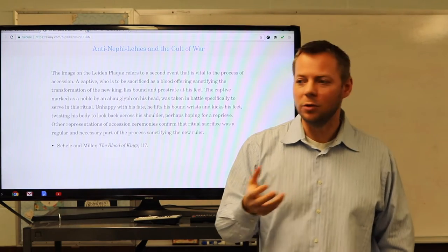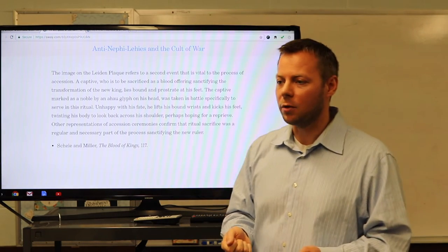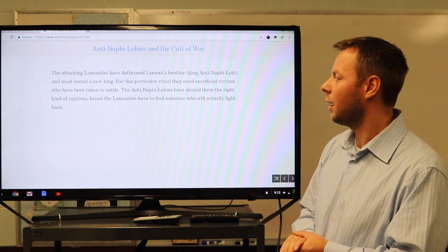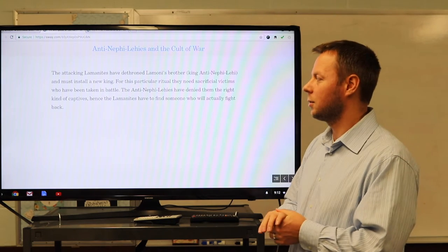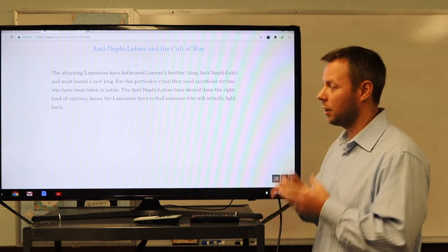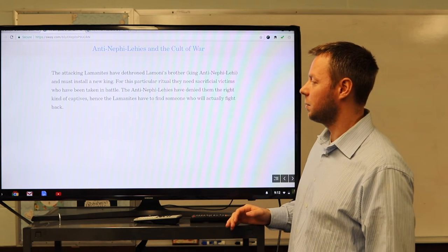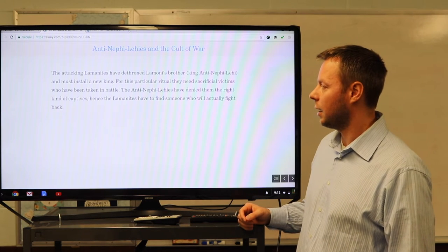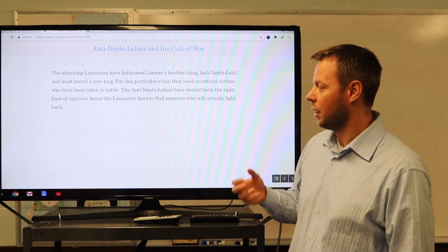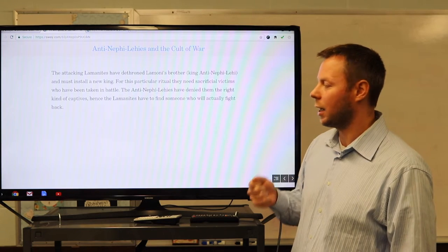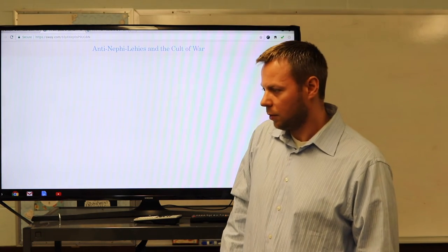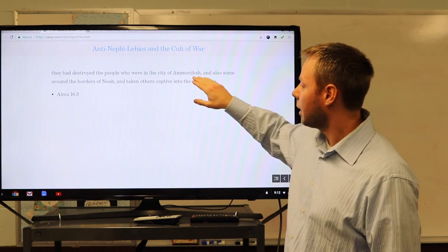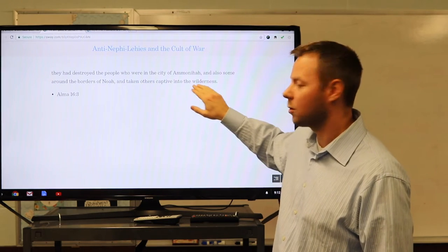Unhappy with his fate, he lifts his bound wrists and kicks his feet, twisting his body to look back across his shoulder, perhaps hoping for a reprieve. Other representations of ascension ceremonies confirmed that ritual sacrifice was a regular and necessary part of the process sanctifying the new ruler. What did they have to do to install a new king? They had to capture someone in battle to sacrifice them. But the anti-Nephi-Lehis, right, they weren't cooperating. So the attacking Lamanites have already dethroned Lamoni's brother, must install a new king. For this particular ritual, they needed sacrificial victims who have been taken in battle. The anti-Nephi-Lehis have denied them the right kind of captives. And the Lamanites have to find someone who will actually fight back. Which is the reason they go to Ammonihah.